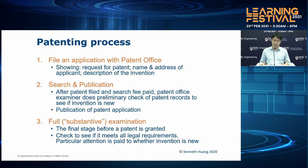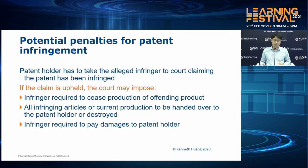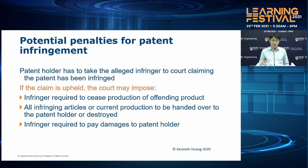Once you have a patent, what rights are you entitled to? The patent holder has the right to take an alleged infringer to court claiming the patent has been infringed. If the claim is upheld, the court may impose that the infringer stop production of the offending product, or that current production be handed over to the patent holder or destroyed. The infringer is also required to pay damages to the patent holder. These are severe consequences if you are found to be infringing upon a patent.